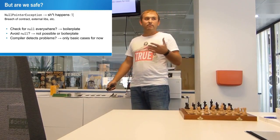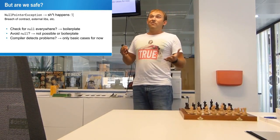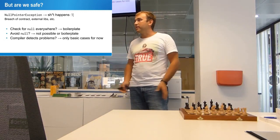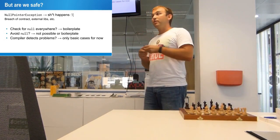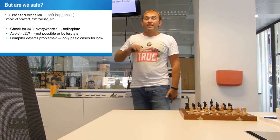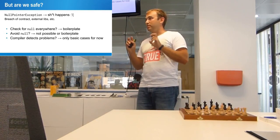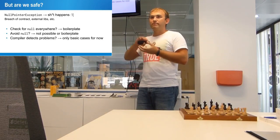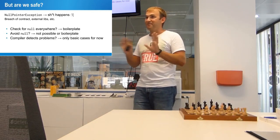What can we do? Checking for null everywhere is boilerplate — it won't work. Avoiding nulls completely in Java is almost impossible; using optionals everywhere is also boilerplate. Sometimes nulls are actually useful. Relying on the compiler to detect errors works only for simple cases — complex null flows are hard for the compiler to detect, and Java is designed to allow nulls. Maybe in Java 10 they'll adopt ideas from Kotlin and make types non-null by default, but we're still not on Java 9, so we never know.